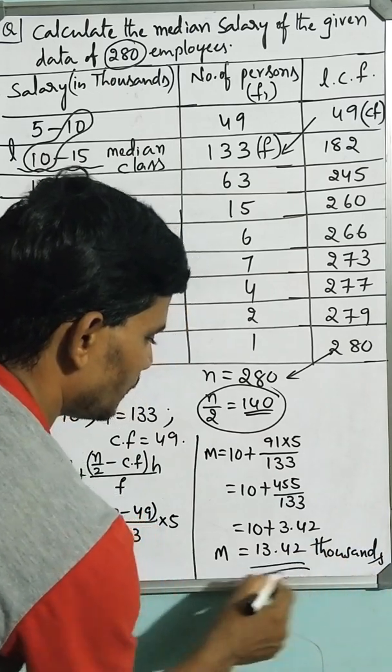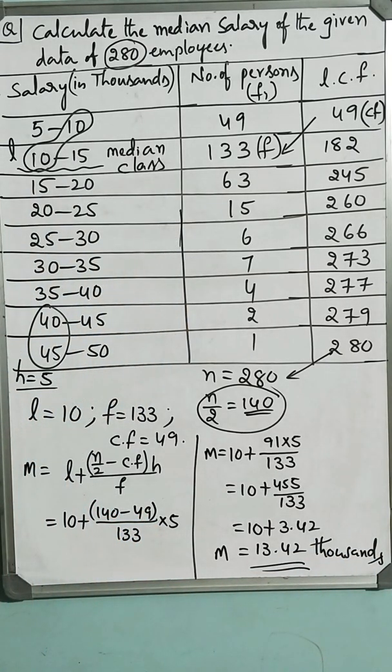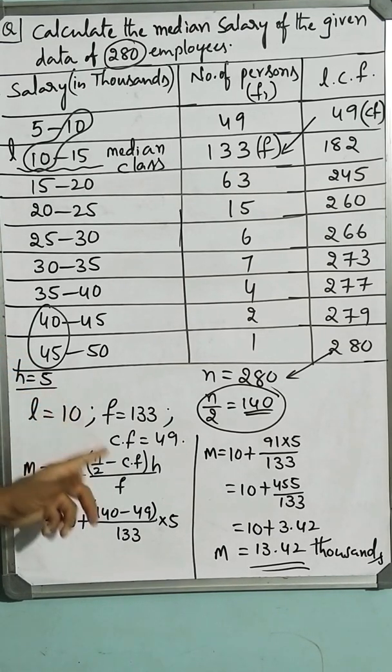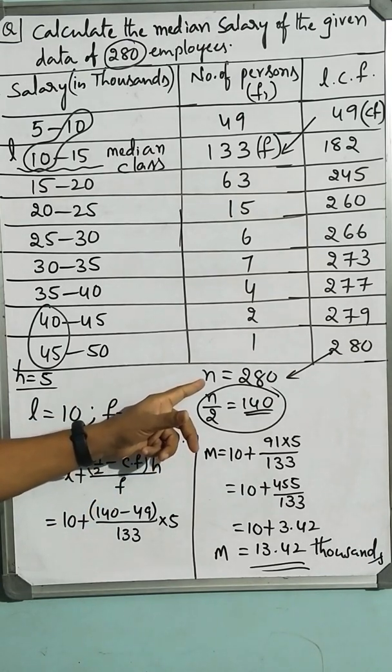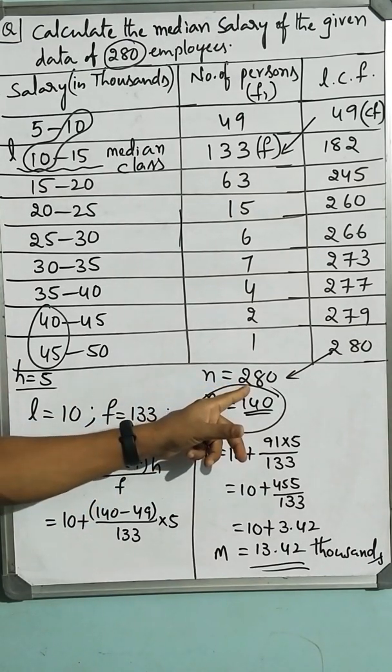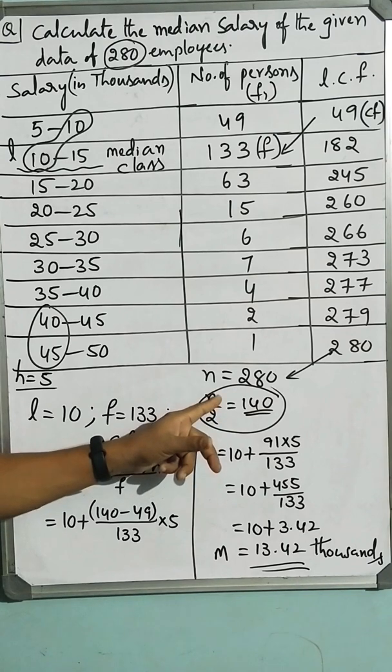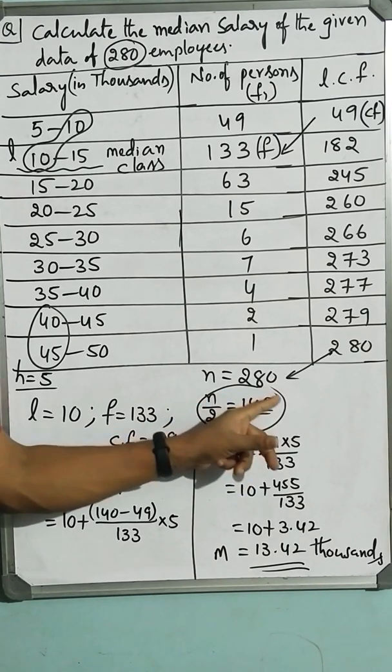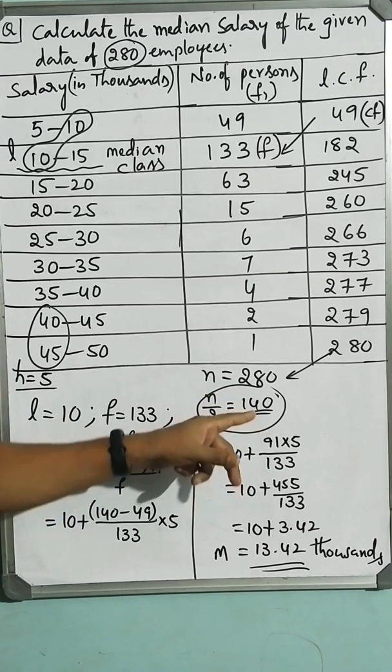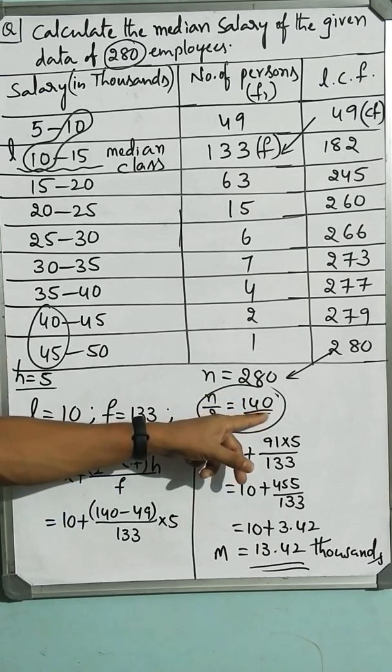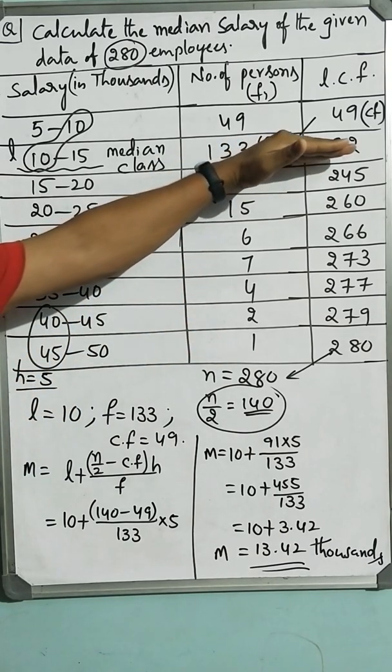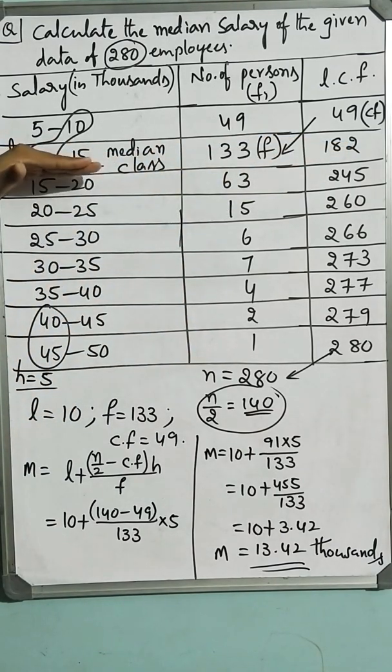So this is how we calculate the median. One more time, while calculating the median, you have to first look at the sum of the frequencies and thereafter you have to take half of the frequencies because there you will find the middlemost value. Middlemost value here, 140 and 141st.